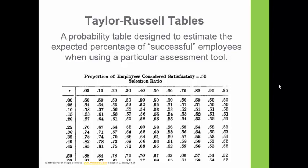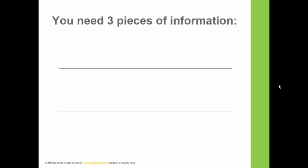Taylor Russell tables is a set of tables that gives you the probability of selecting successful employees — employees who will be successful on the job — when using a particular assessment tool. Keep in mind that these tables are tied to a specific assessment tool. I'm going to walk you through step-by-step how to use them.